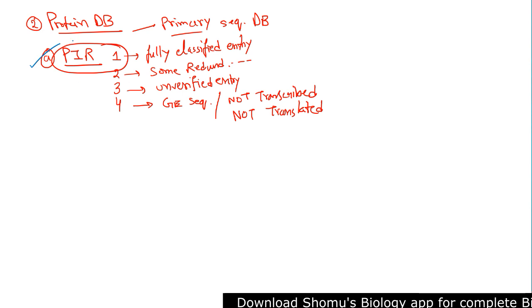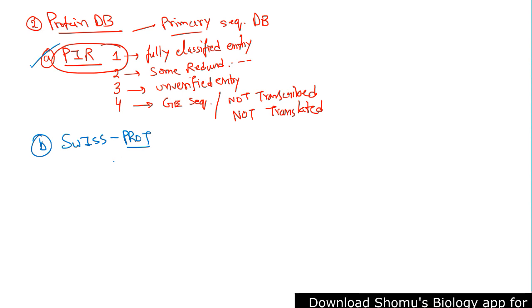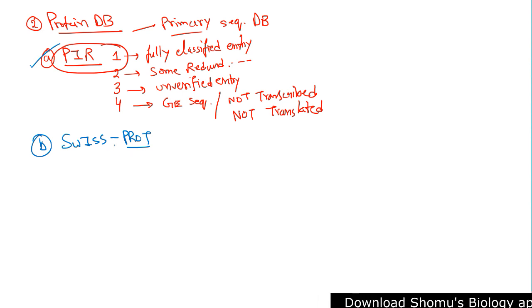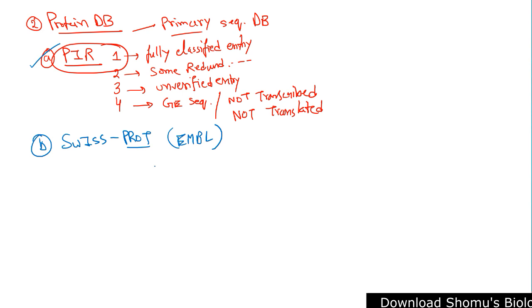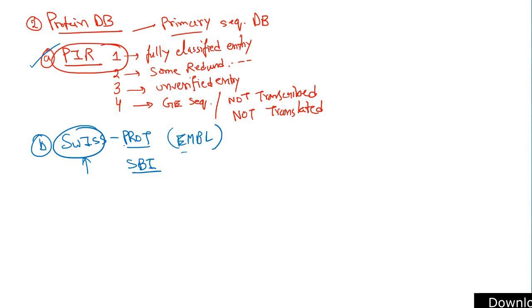The second type of database is Swiss-Prot — 'Prot' being the short form of protein. It was developed by the Department of Medical Biochemistry at the University of Geneva under EMBL, but is now maintained by the Swiss Institute of Bioinformatics (SIB).